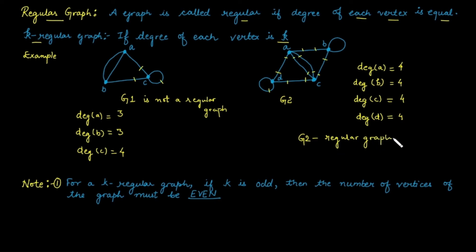Moreover, we can call G2 a four-regular graph, because the degree of each vertex is four.